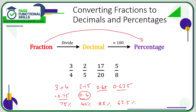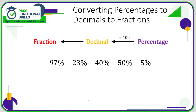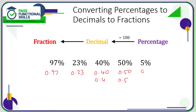Percentage to decimal is straightforward — just divide by 100. So 97% becomes 0.97, 23% becomes 0.23, 40% becomes 0.40 (or 0.4). Be careful with a single-digit percentage: 5% is 0.05, not 0.5, because 0.5 is 50%.